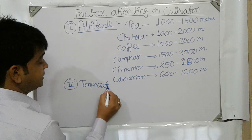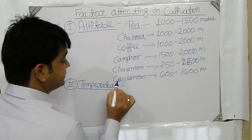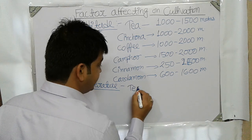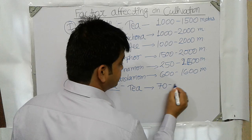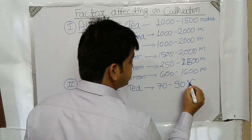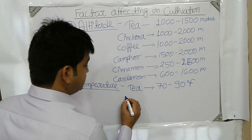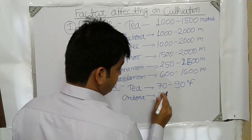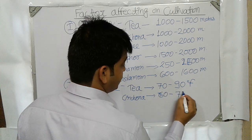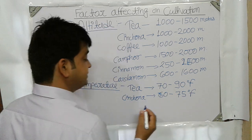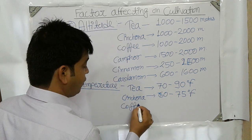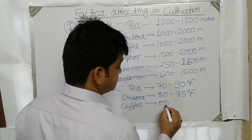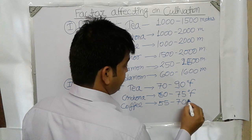Temperature refers to the climatic temperature where the medicinal plant is growing. For the same plants: tea requires 70 to 90 Fahrenheit, cinchona requires 60 to 75 Fahrenheit, and coffee requires 55 to 70 Fahrenheit.